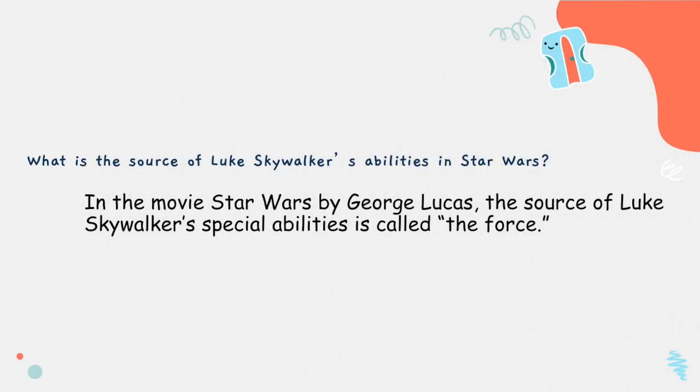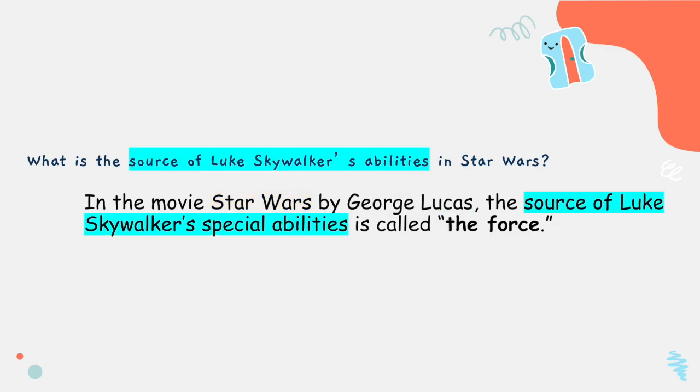Let's take a look at just one more example from a popular movie. The question is: what is the source of Luke Skywalker's abilities in Star Wars? And the point that we've come up with is: in the movie Star Wars by George Lucas, the source of Luke Skywalker's special abilities is called the Force. Once again, we've mentioned the text title — in this case the movie title — and what we would consider the author's name, which would be the director of the movie. We also use the key words from the question, and we went on to answer the question with the Force.